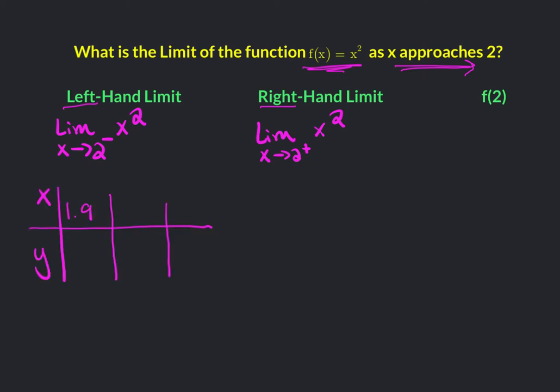Approaching 2 from the left. So, 1.9, that's pretty close to 2. Can we get a little closer? Let's try 1.99. Even closer, 1.999. Plug those x values into the function x squared. 1.9 squared is 3.61. 1.99 squared is 3.9601. And 1.999,